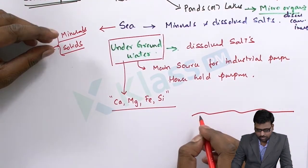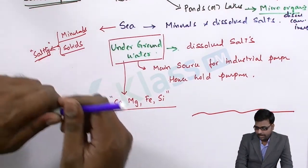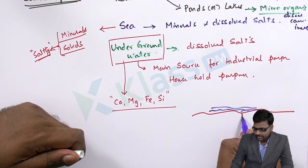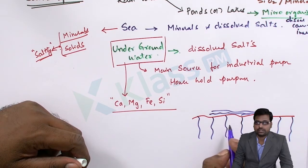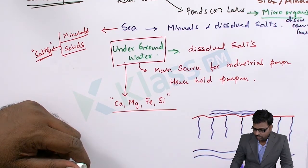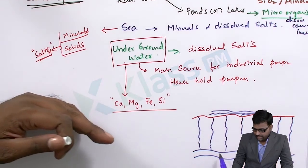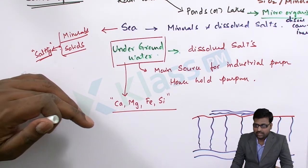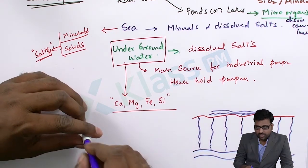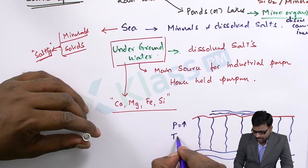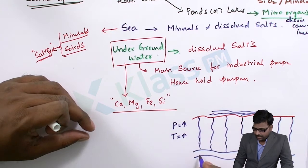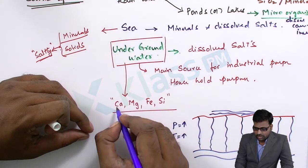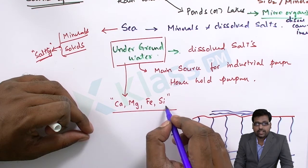Looking at this diagram, you can understand: this is the land surface, and as rainwater flows, some of the water goes inside through the gaps between the layers of soil. It accumulates and flows much the same way river water flows on the surface. Similarly, groundwater flows inside the earth's crust, and while passing through this journey, because of high pressure and increase in temperatures, the water dissolves whatever salts it comes across — calcium, magnesium, iron, and in some cases silica.